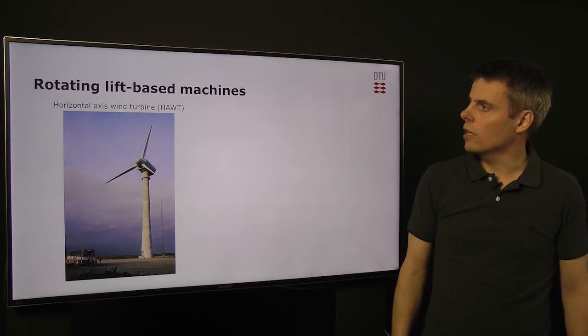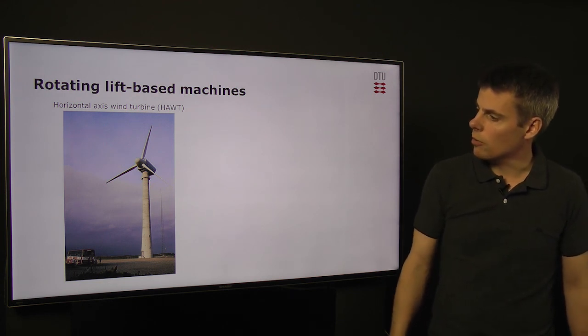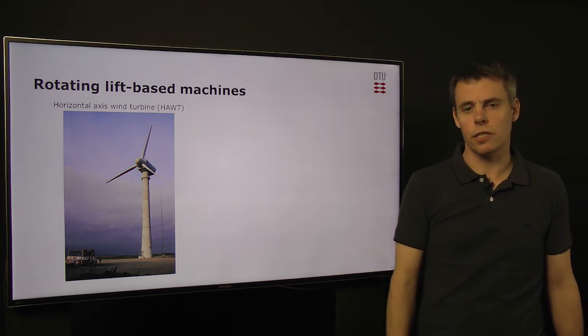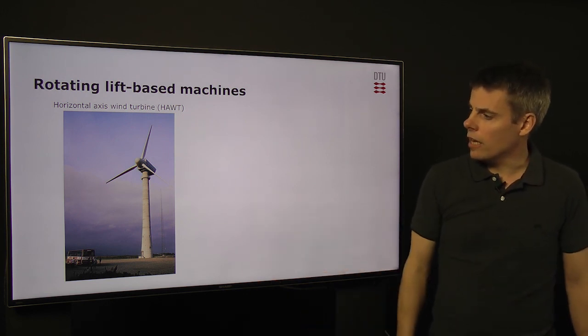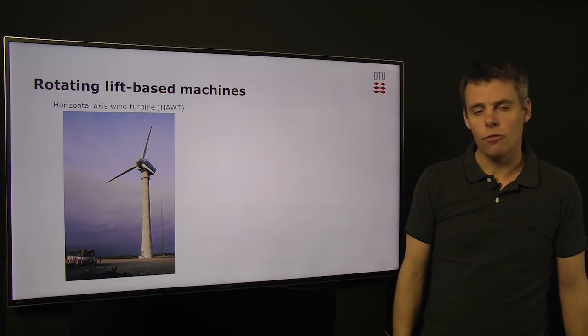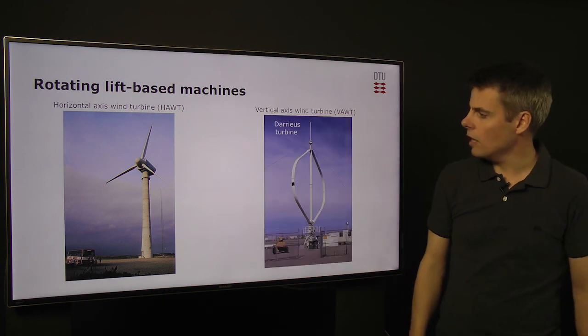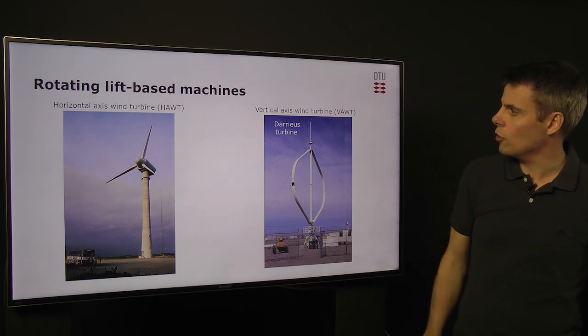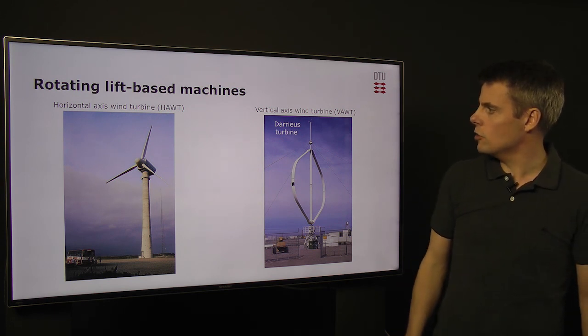Here are some examples of the horizontal axis wind turbine. This is a very old turbine, one of the old research turbines in Denmark, and they have of course developed far from that time. Another example of rotating lift-based machines is this vertical axis wind turbine,